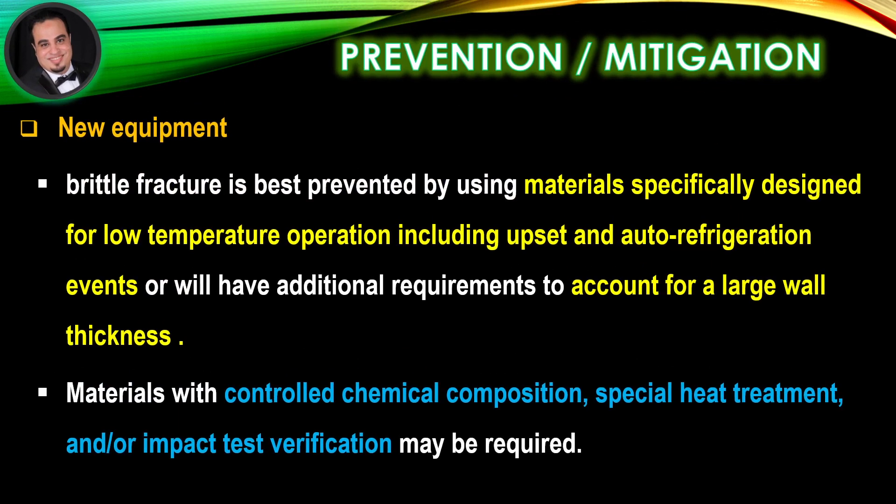Prevention and mitigation — for new equipment: brittle fracture is best prevented by using materials specifically designed for low temperature operation, including upset and auto-refrigeration events, or that have additional requirements to account for large wall thickness. Materials with controlled chemical composition, special heat treatment, and/or impact test verification may be required.